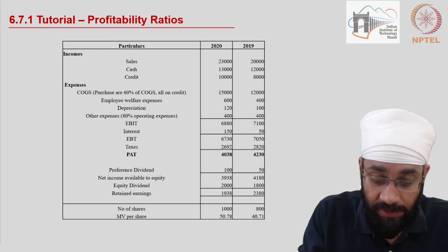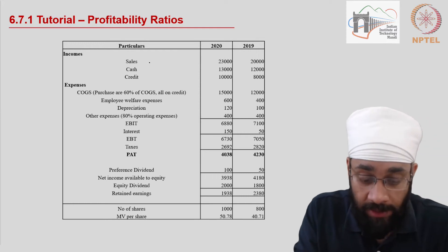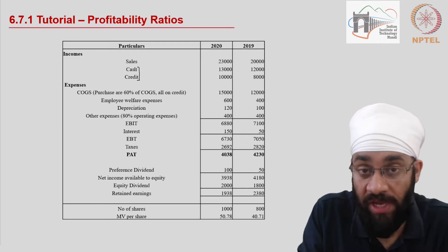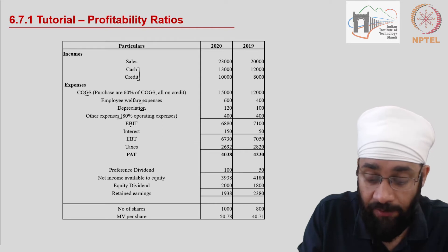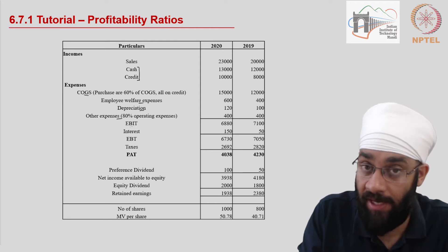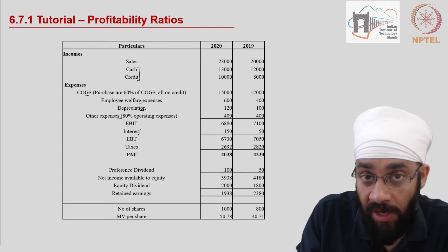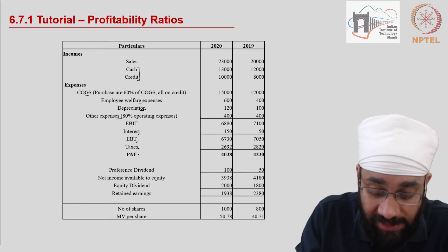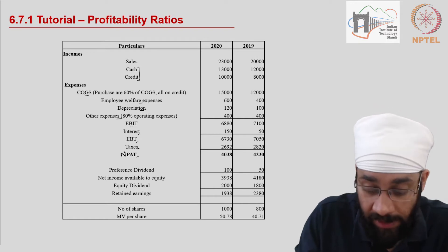Let's look at this income statement. The format should be familiar — you have sales given for two years, categorized into cash sales and credit sales. You have cost of goods sold, employee welfare, depreciation, and other expenses. Then you are left with Earnings Before Interest and Tax (EBIT). You pay interest out of EBIT, leaving Earnings Before Tax (EBT), then you pay taxes.